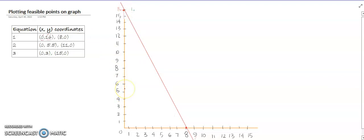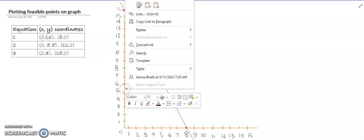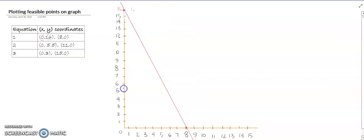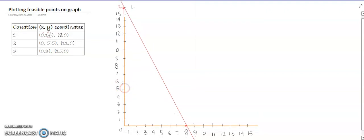We have point 0 and 5.5 on x2, so we are going to denote it somewhere here - 5.5 between 5 and 6. On the other hand, it is 11 and 0, so 11 is from x1, here is 11.